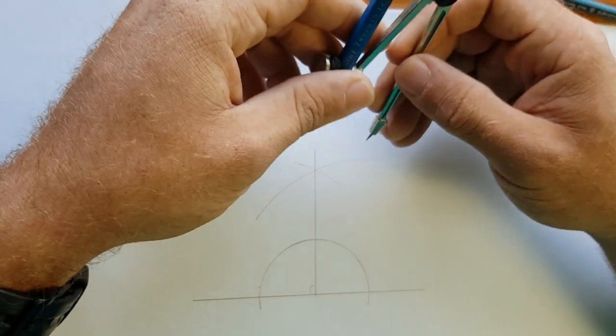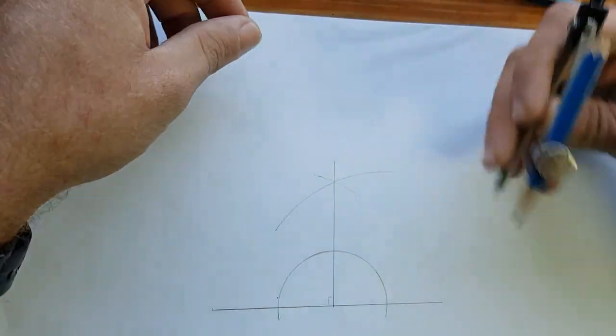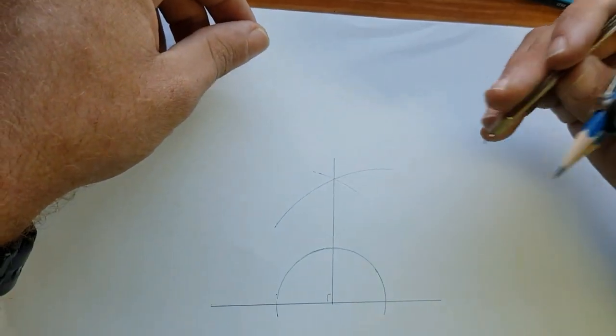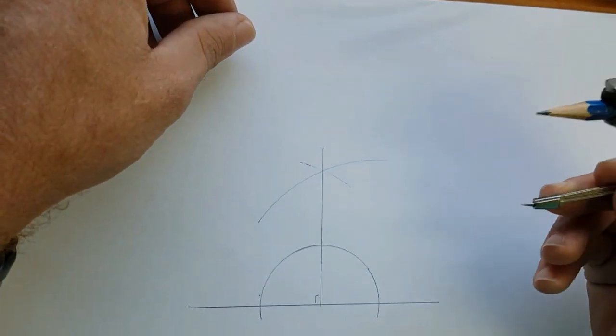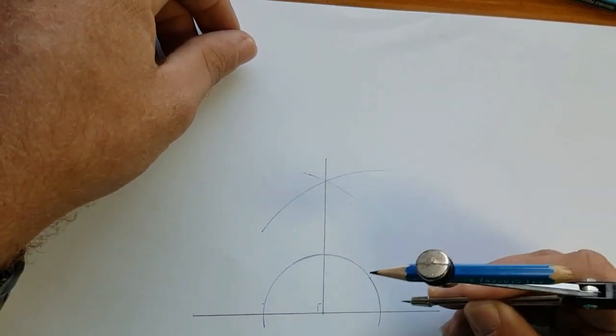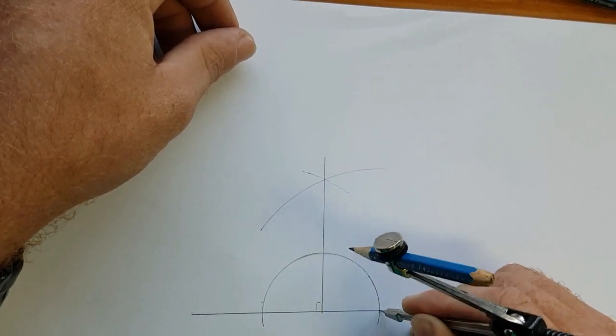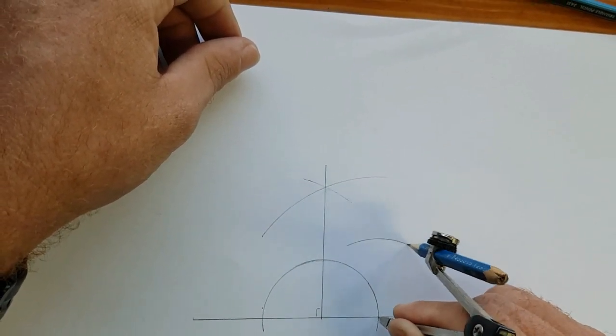To construct your 45 degrees, we bisect our 90 degrees because half of 90 is 45. So, using our semicircle, where it cuts the baseline, we scribe an arc.